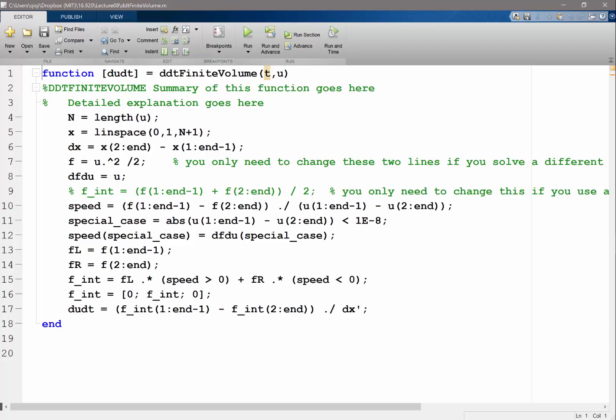So let's go through the code again. We have a solution, we produce the x and the volume size dx. We compute the flux of the Burger's equation u squared over 2 and we also computed the characteristic speed inside each volume.